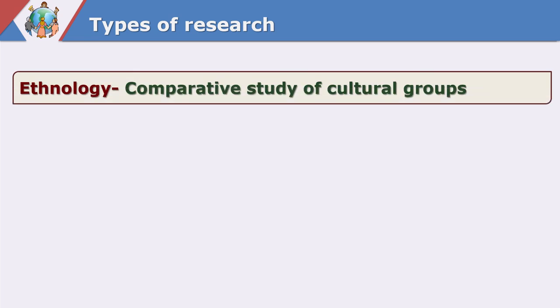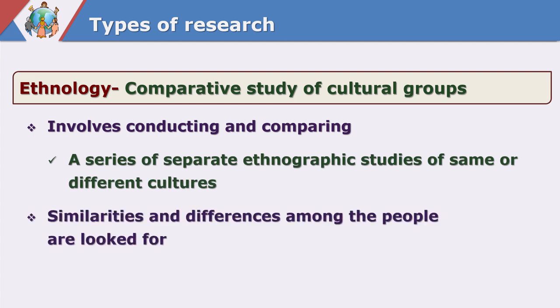There are two types of ethnographic research: ethnology and ethno history. Ethnology is the comparative study of two different cultural groups. It involves conducting and comparing a series of separate ethnographic studies of the same or different cultures, looking for similarities and differences among people. For example, if we find two islands very close by, many things about the people living on each island may be the same, but because they are isolated from each other there may also be differences in rituals and language. Studying exactly what similarities and differences are observed is ethnology.